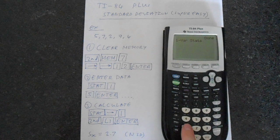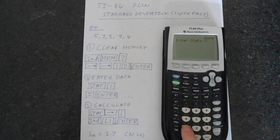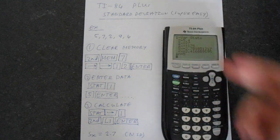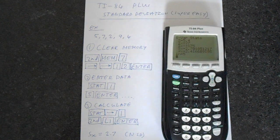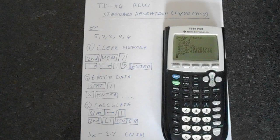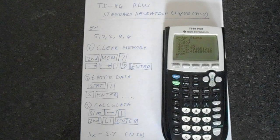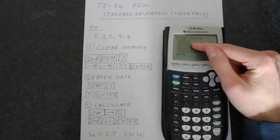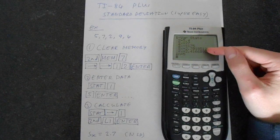So we do second function. Now number one you've got list one up here. Second function accesses that and then you just press enter and it gives you all the statistical stuff you could possibly need in basic single variable statistics. You've got the mean, the sum of the x, the sum of x squared,